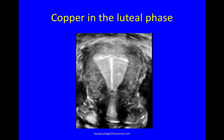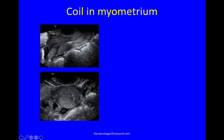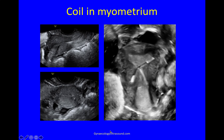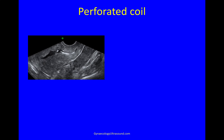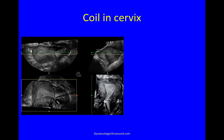Coils show up beautifully on 3D ultrasound. Here is a copper coil in the luteal phase endometrium with a normal-shaped cavity, but on 2D the coil position was hard to determine — you can see a shadow and a suggestion of coil on 2D transverse. On 3D it is instantly obvious: one arm of the coil has perforated the myometrium. In another case it was not at all clear on 2D, but on 3D it was obvious — the coil had been inserted through the posterior uterine wall. In another case the coil is in the cervix.